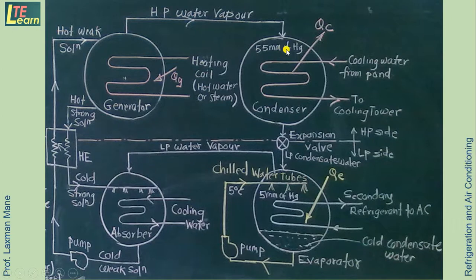So after rejection of heat, condensate is passing through the expansion valve. Thus it becomes low pressure condensate water. This is coming to the evaporator.